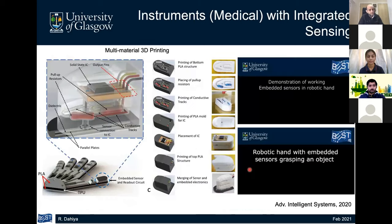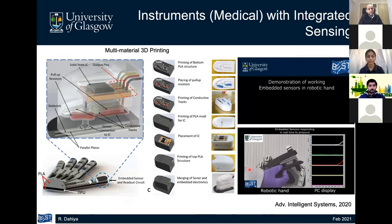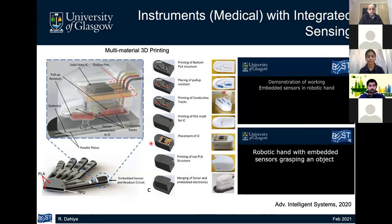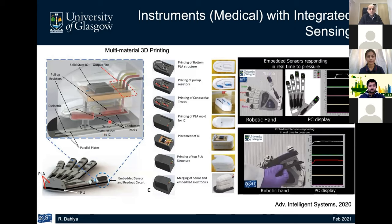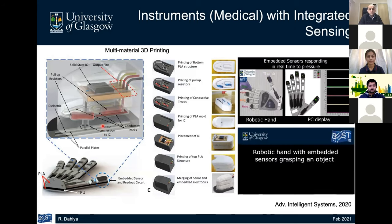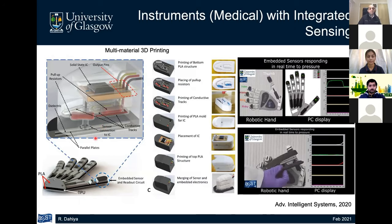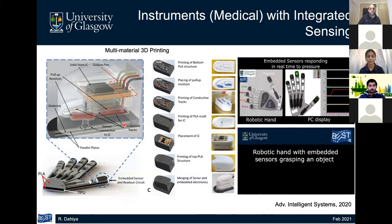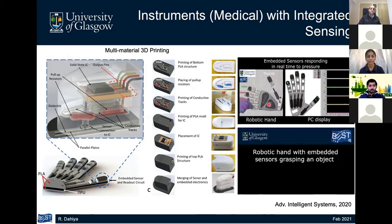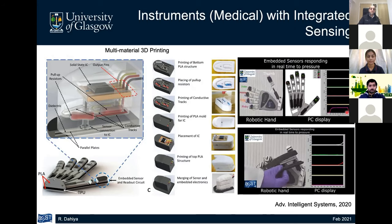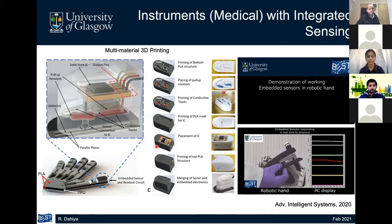Another technological direction is material integrated sensing: you develop the structure — for example a robotic hand or medical instrument — in such a way that sensors are an inherent part of the structure, with no dedicated sensor needed separately. In this example, the hand was 3D-printed by alternating layers of plastic and conductive lines with a gap in between, essentially forming a capacitor. The hand thus has capacitive sensors as part of its structure. Different capacitive sensors are integrated on the fingertip, and all the electronics can be embedded in the 3D-printed structure itself, with only the data of interest coming out.